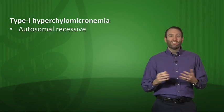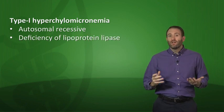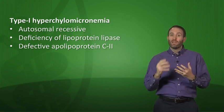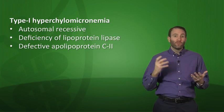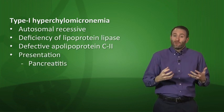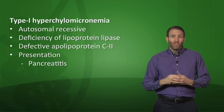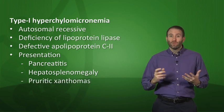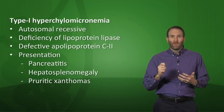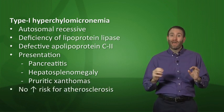There are three dyslipidemias to remember. Type 1 hyperchylomicronemia is autosomal recessive, caused by deficiency of lipoprotein lipase or a defective ApoC2. You'll find increased levels of chylomicrons, triglycerides, and cholesterol. Patients present with pancreatitis from elevated triglycerides, hepatosplenomegaly, and eruptive xanthomas from increased cholesterol. Importantly, there is no increased risk of atherosclerosis.